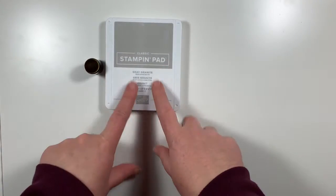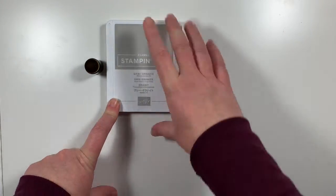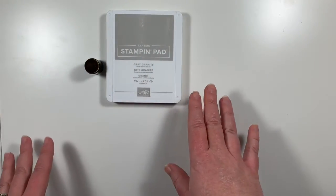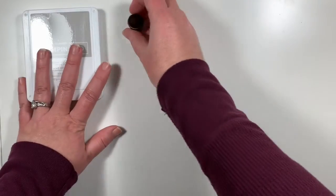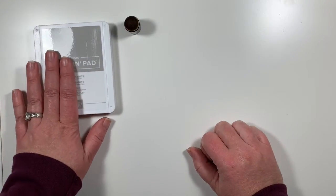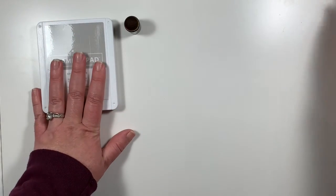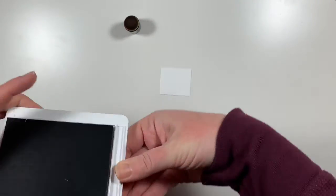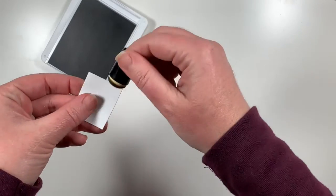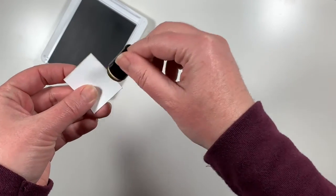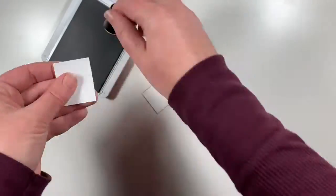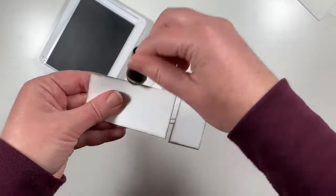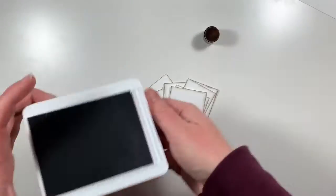So the next step is to take some gray granite. This is the classic Stampin' Pad in the new pad style. I just replaced all of my neutral colors and all of my regals. And I'm still working on the other color families. But I got those replaced. And I'm so excited because they're nice and inky. They're super juicy. And they work so well. They're beautiful colors. So I have my sponge dauber here. And I'm going to take all of those panels that I just cut out. And I'm just going to very gently sponge the edge of each of those pieces.